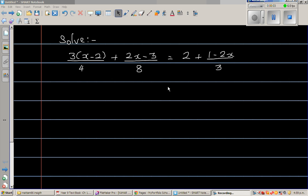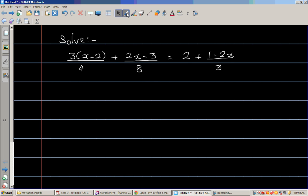Let us look at this complex linear equation. First we'll do it algebraically and I'll then show you how to check it on a graphic calculator. So the equation is 3 times x minus 2 over 4 plus the whole thing.